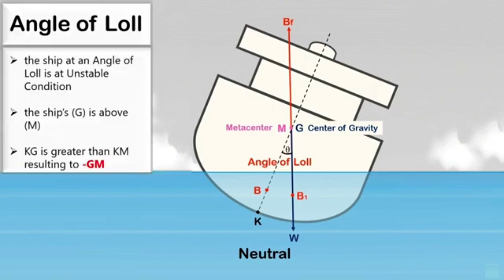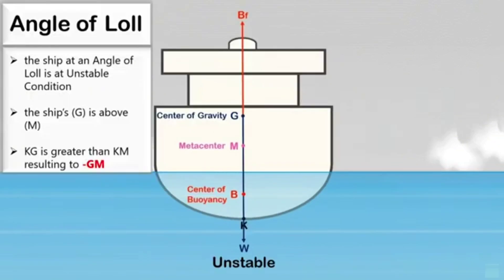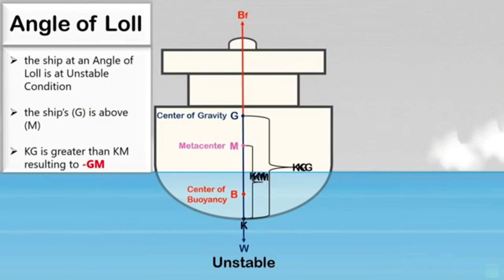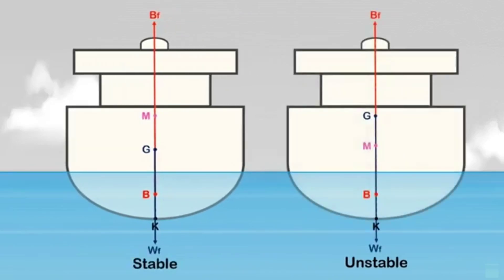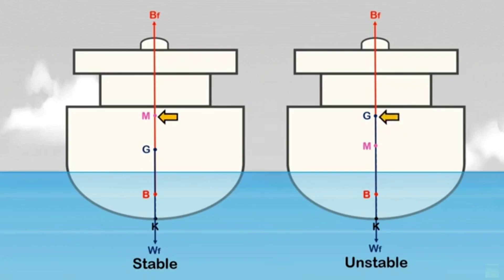A ship at an angle of loll means that she is in an unstable condition. The ship's center of gravity G is above the metacenter M, where KG is greater than KM, so the metacentric height or GM is negative. In the stable condition, the metacenter is above the center of gravity. In the unstable condition, the ship's center of gravity is above the metacenter when the vessel is heeled by external forces to some angle.